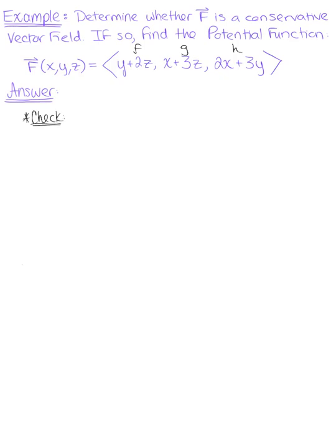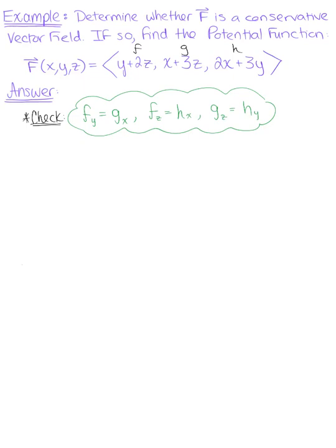So what exactly are we checking? We need to check: does the partial derivative of f with respect to y equal the partial derivative of g with respect to x? Does the partial derivative of f with respect to z equal the partial derivative of h with respect to x? And does the partial derivative of g with respect to z equal the partial derivative of h with respect to y? If all three of these equivalence properties hold true, F is conservative and we can find the potential function.